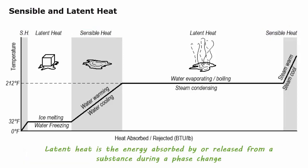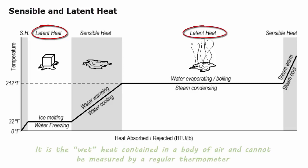Latent heat is the energy absorbed by or released from a substance during a phase change. It is the wet heat contained in the body of air that cannot be measured by a regular thermometer.